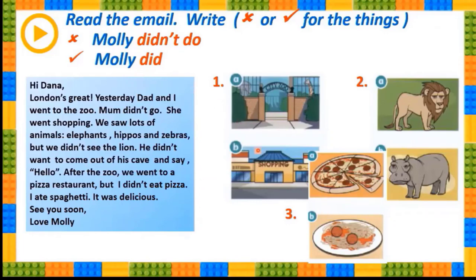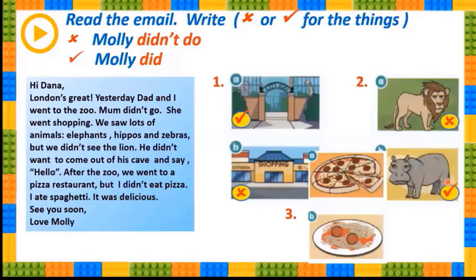Now let's look at these pictures and cross or tick them. Cross means Molly didn't do these things; tick means she did. In picture one we see a city zoo and a shopping center - Molly went to the city zoo but didn't go shopping. In picture two, she saw the hippo but didn't see the lion. In picture three, she ate spaghetti but didn't eat pizza.